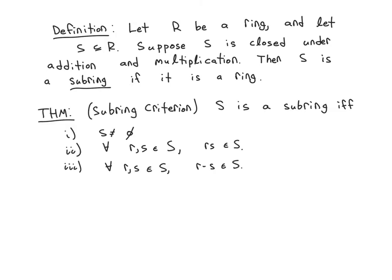Of course, it turned out there was an easier way to show something was a subgroup called the subgroup criterion. In much the same way, an equivalent definition of subring is the subring criterion. So a subring, S is a subring, if and only if it satisfies these three conditions.